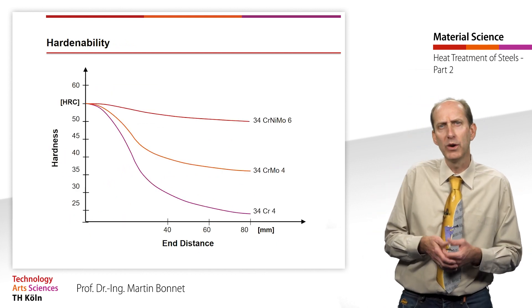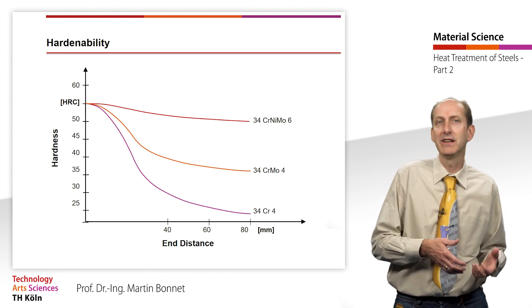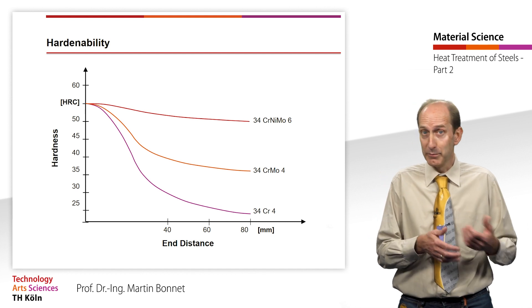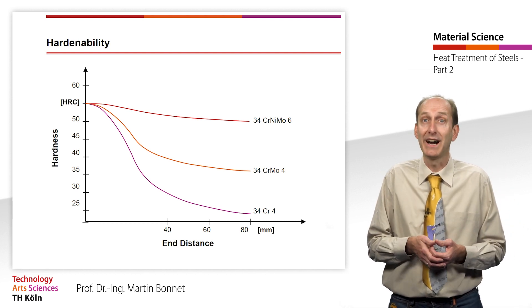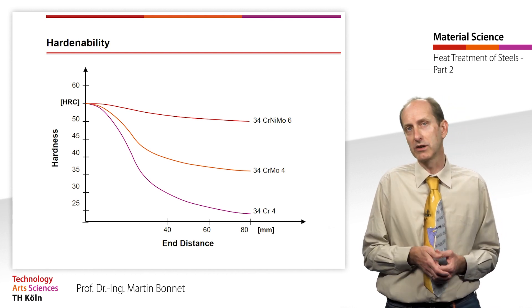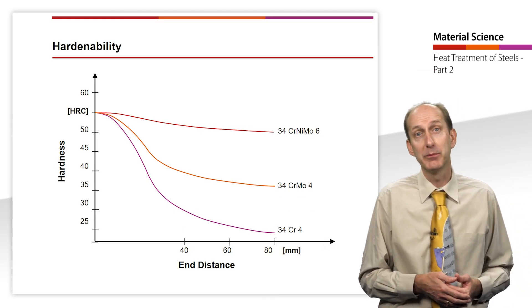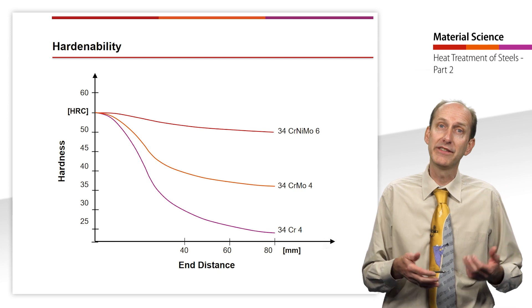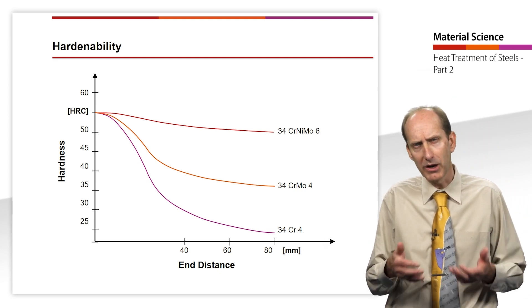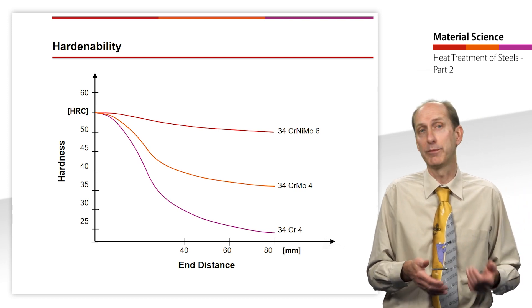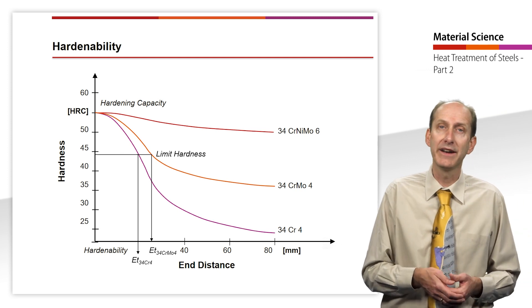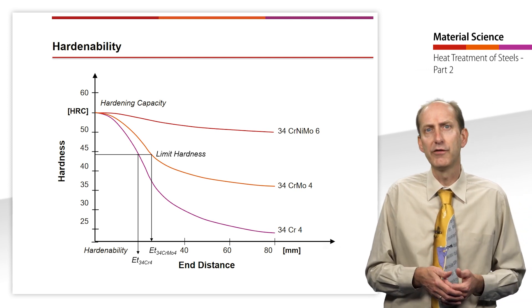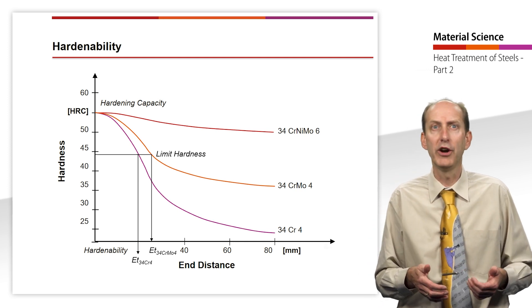In this context, I would like to define once again the important terms relating to hardening and tempering, even though we have already mentioned some of them in the video about the time temperature transformation diagram. Hardenability is the property of steel to take in hardness when quenched. It is described by two material characteristics. Hardening capacity is described by the greatest hardness attainable at the edge. It depends solely on the carbon content. More than 65 HRC, which corresponds to about 720 HB, is not possible. Hardenability is described by the hardening depth of the martensitic transformation. Hardening depth is a distance in mm from the edge perpendicular to the core to a point with an agreed limit hardness.